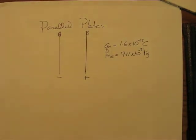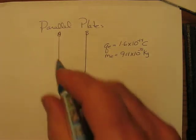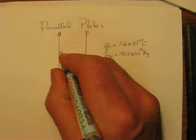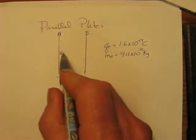Welcome to VideoAssist. Charges that are placed in parallel plates, such as an electron placed here, will be accelerated to the right.